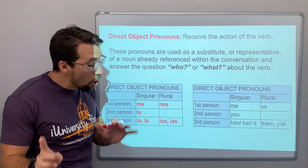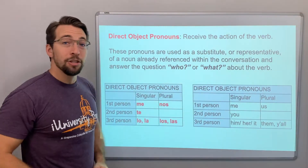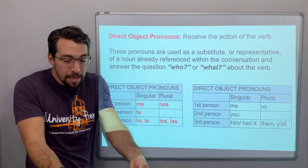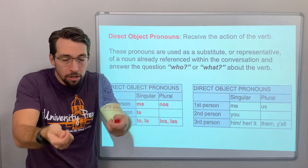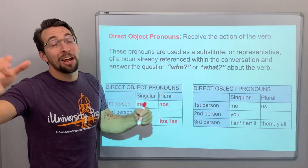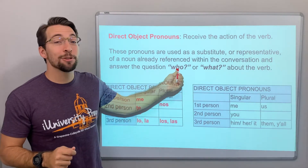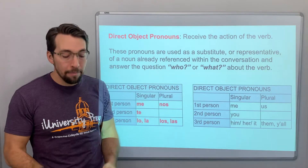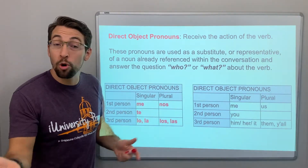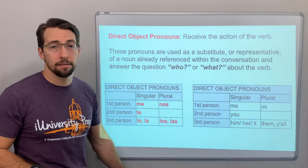So, direct objects. Direct objects receive the action of the verb every time. He hit me. I made them — what did I make? I made cookies. These pronouns substitute or represent a noun. Direct object pronouns answer the question who or what about the verb. I made them — what did you make? Them, the cookies. He hit me — who did he hit? Me. Me, te, lo, la, nos, los, las. We're good.